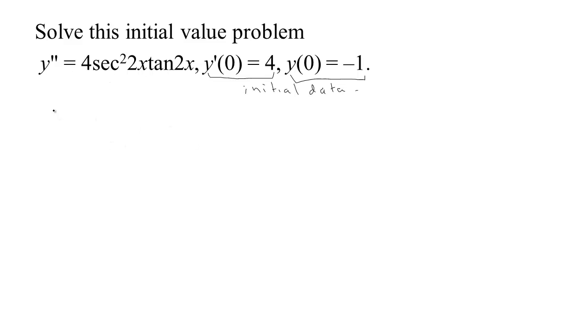Now we've got y double prime. If we want to find just y prime, that would be the antiderivative of y double prime. And y double prime is the secant squared of 2x times the tangent of 2x dx. Now we can do a little substitution. Just the 2x's are kind of making my eyes go cross. So why don't I let u be 2x, then du would be 2dx.